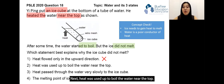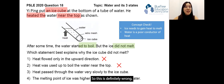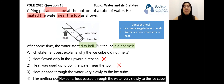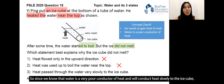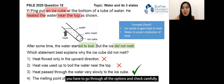Next, option two: heat was used up to boil the water near the top. No, this is also a wrong option because you cannot use up energy — energy cannot be destroyed. So this is definitely wrong. Option three: heat passed through the water very slowly to the ice cube. Since we know water is a very poor conductor of heat and will conduct heat slowly to the ice cube, this is the correct answer. But like a good student, go through all the options and check carefully.